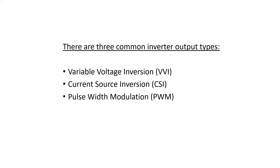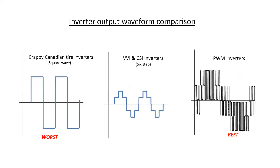There are three common inverter output types: Variable Voltage Inversion (VVI), Current Source Inversion (CSI), and Pulse Width Modulation (PWM). Their waveforms include a square wave at the most basic level — simply a long burst of DC in the positive and then a long burst in the negative. None of these waveforms really look like a true sine wave; they basically look like a rough approximation of one.